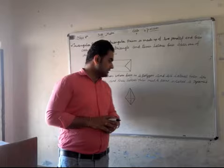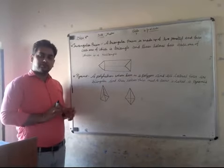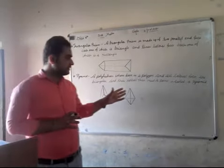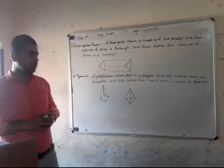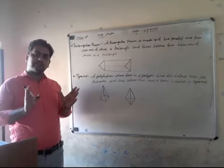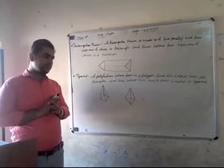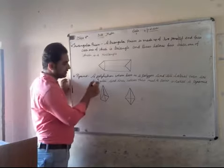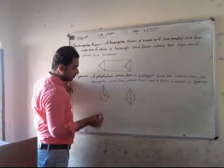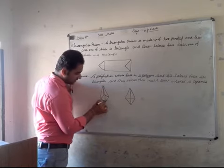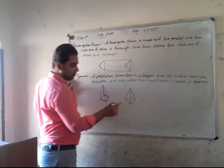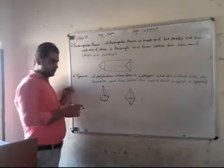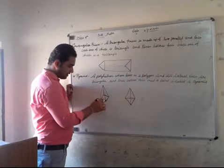All lateral faces are triangular, and these lateral faces meet at a point — this is called a pyramid. All the lateral faces meet at one point and that is called a pyramid. We are going to explain the definition. The base is a polygon, such as a square, and the lateral faces are triangles.